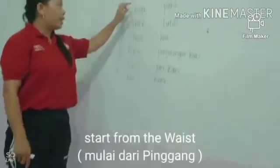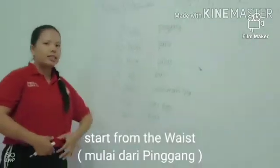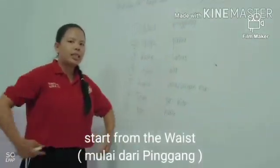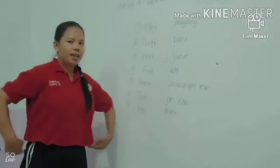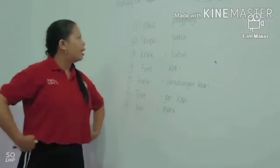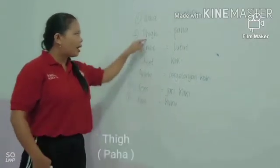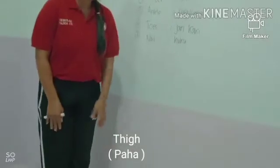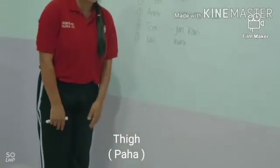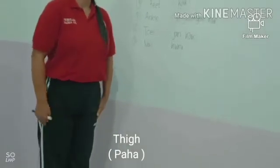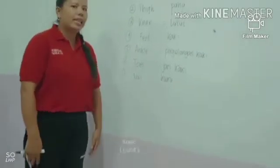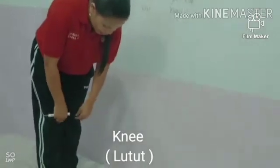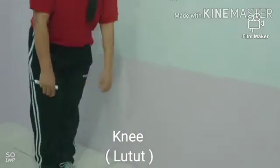Starting from the waist — this is our waist. In Malay: pingang. And then the thigh — paha. And the knee — this is our knee.